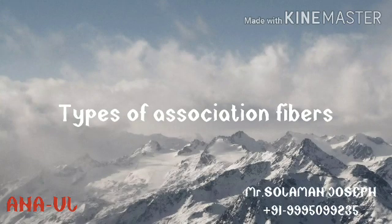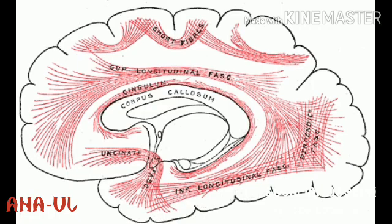The types of association fibers include short association fibers or U-fibers, which connect adjacent gyri. Their types include intracortical fibers, located in the deeper portion of the white matter, and subcortical fibers, located just beneath the cortex. The long association fibers connect more widely separated areas. Their types include the uncinate fasciculus, which connects the inferior frontal lobe gyri with the anterior temporal lobe.